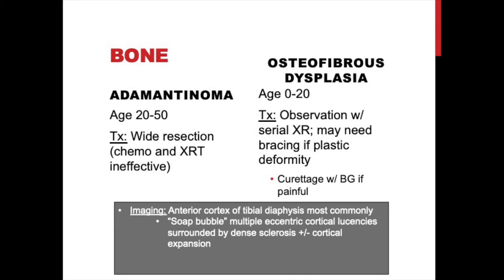For osteofibrous dysplasia, treatment can be observation alone with serial X-rays as lesions may burn out or remodel over time. Bracing may be needed for plastic deformity, or curettage with or without bone grafting for significant deformity or severe pain. What these two have in common: imaging usually shows both in the anterior cortex of the tibial diaphysis, with a soap bubble appearance — multiple eccentric cortical lucencies and septations surrounded by dense sclerosis — generally preserving the intramedullary component.